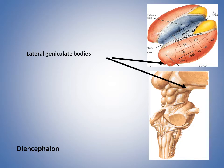Looking at the thalamus: the lateral geniculate bodies on the posterior part contain the lateral geniculate nucleus, and you can see how close it is to the superior colliculus — right at the base of the thalamus, at the top of the midbrain, just lateral to the superior colliculus. Also note that it's just posterior to the VPL (ventroposterolateral nucleus) and VPM (ventroposteriomedial nucleus) — those are the ones containing synapses for the third neuron of the sensory tracts from earlier in the semester.